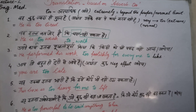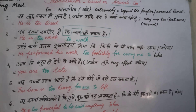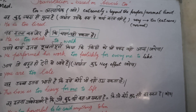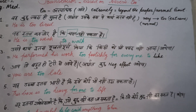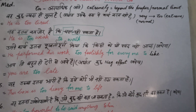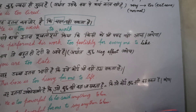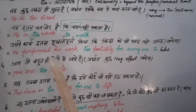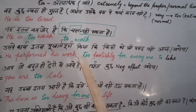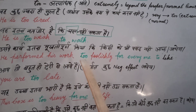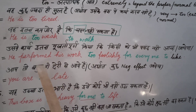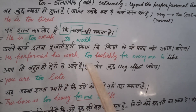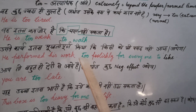Both structures are the same because these two actions denote future. Whenever we use TOO, we denote a future action. For example: 'He performed his work too foolishly' — here TOO is an adverb modifying another adverb.